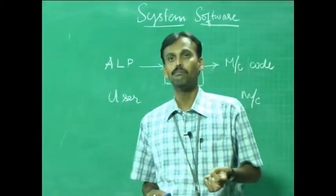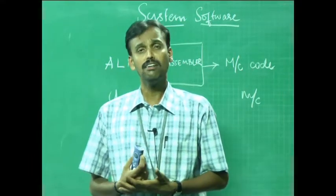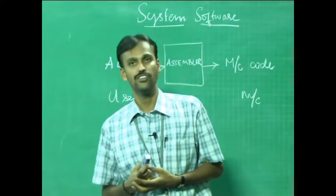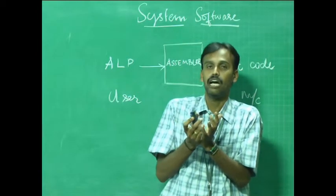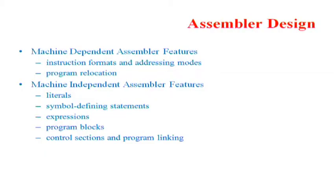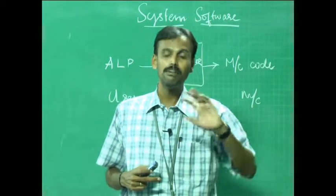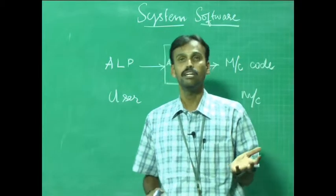Assembler design distinguishes between machine dependent and machine independent assembler features. Machine dependent features include instruction formats, addressing modes, and program relocation. Machine independent features include literals, symbol defining statements, expressions, program blocks, and control sections with program linking — all of which do not depend on machine-specific features.